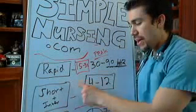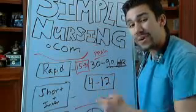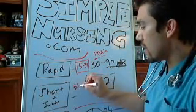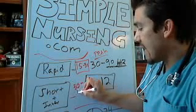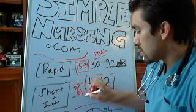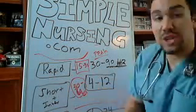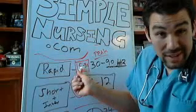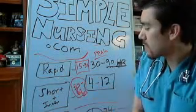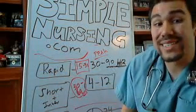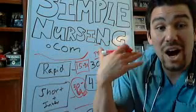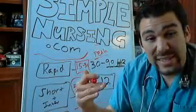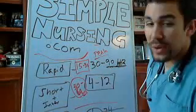Almost the same thing with the short actresses: you have between 30 minutes to an hour for your onset. We know it can't happen in less than 30 minutes because that would be rapid acting. So between 30 minutes to 60 minutes is our onset, and then our short actresses — being really short — have a peak between 4 and 12 hours.